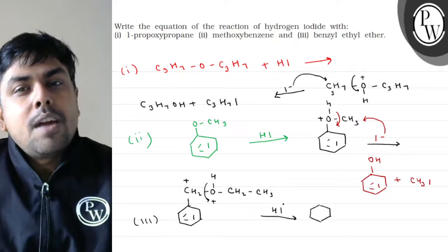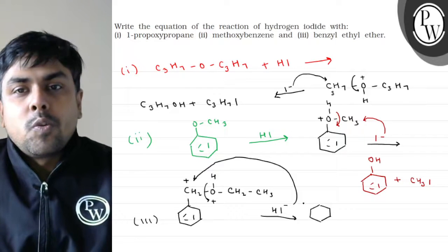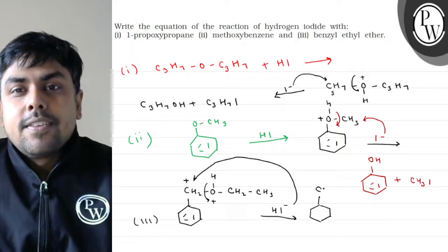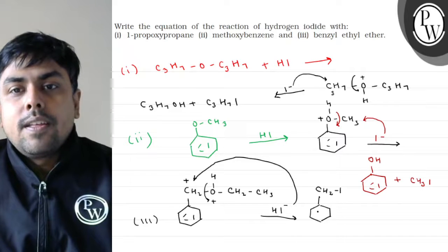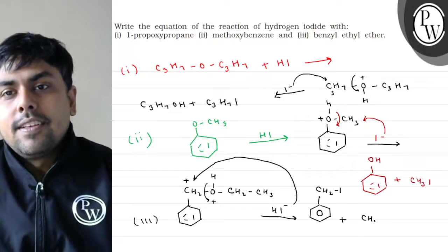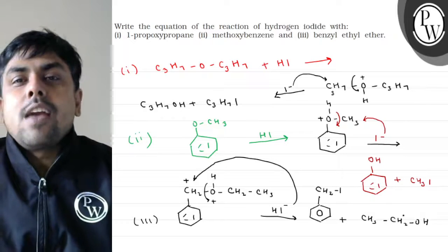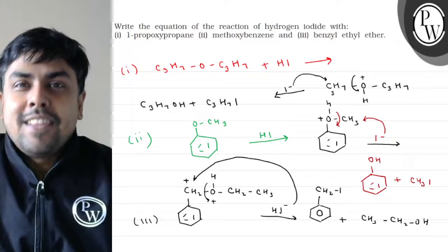So what is this as a leaving group? I+ C6H5-CH2-OH. I hope you understood the question.